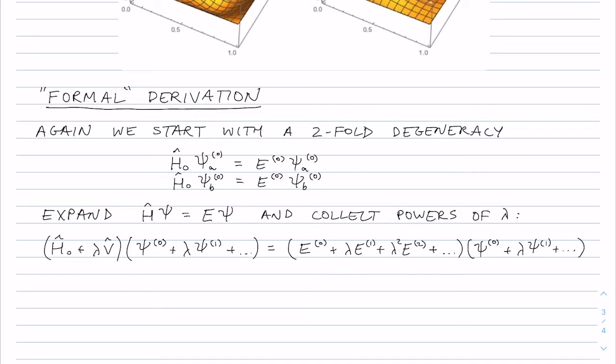Okay, so we write something like this that has all the powers of lambda and we're going to keep only the first power in lambda.